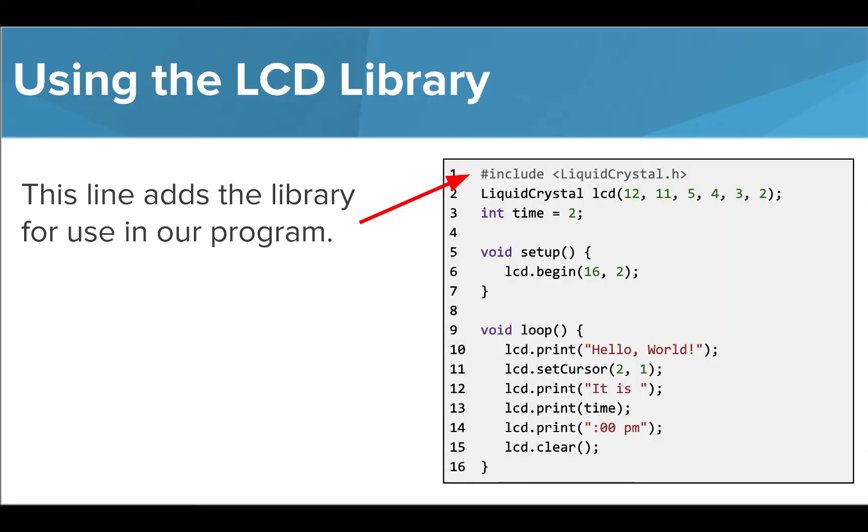We learned that we need to add the library in order to use its functionality in our program. For example, to use the liquid crystal library, we need to type #include and enter the library name.h inside angle brackets.